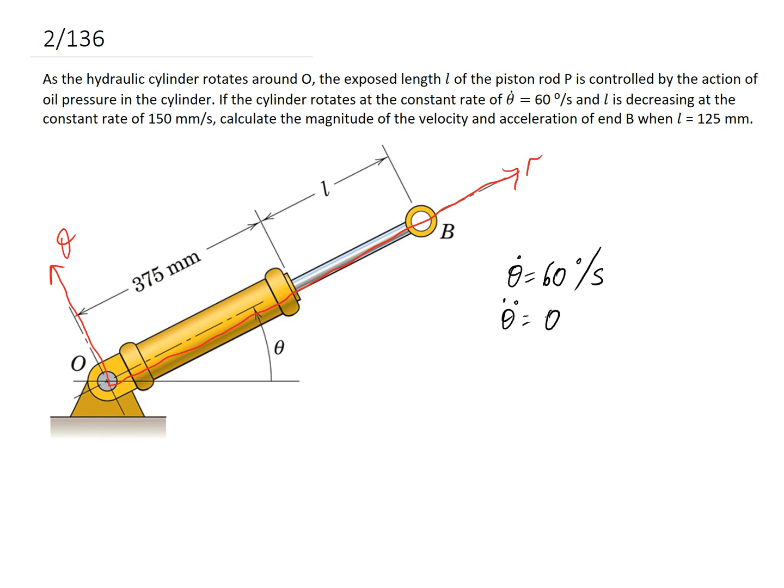So the next things all relate to the length. So in this case, we'll write it all down. So we're told that we're interested in the situation where the length is 125 millimeters. We're also told that L is decreasing at a constant rate of 150 millimeters per second. So L dot, if it's decreasing, it's going to be moving back toward the origin, getting smaller. So it's going to be negative 150. And if it's at a constant decreasing rate, that means that the acceleration is also zero in this case.